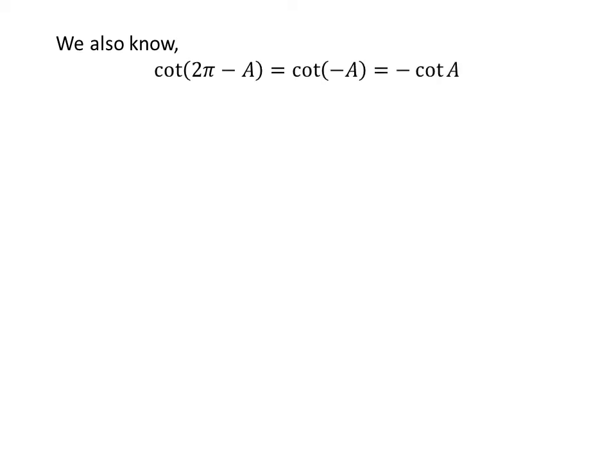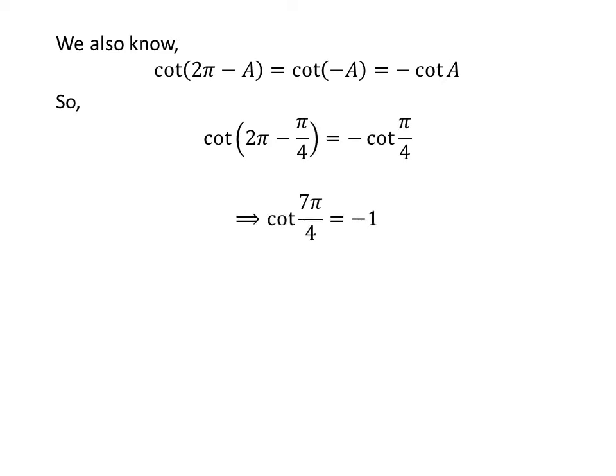We know the value of cotangent of x repeats after an interval of 2 times pi, so cotangent of 2 times pi minus a is equal to cotangent of minus a. We also know the identity cotangent of minus a is equal to minus cotangent of a. Applying these identities gives us cotangent of 7 times pi upon 4 is equal to minus 1.